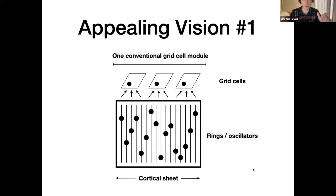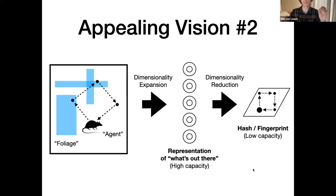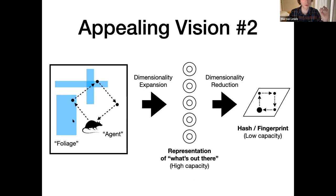From a more theoretical, information processing perspective, it's going to be a dimensionality expansion and a dimensionality reduction. As an animal moves through an environment, these 1D rings would all perform their own updates, representing what's out there — boundaries, object vector cells, and so on. But then somehow that gets reduced onto 2D grid cells that behave as the 2D grid cells we're familiar with, that we see empirically. I'm trying to get something that does this.